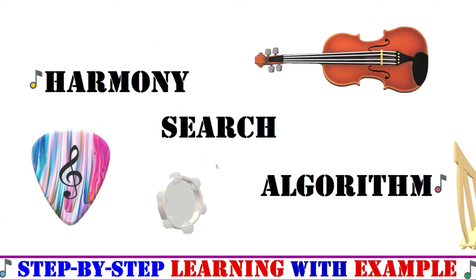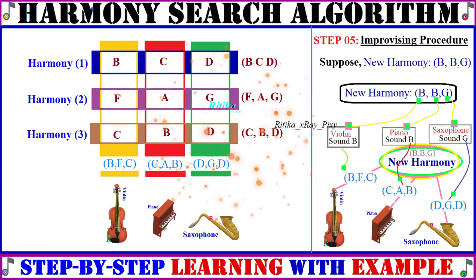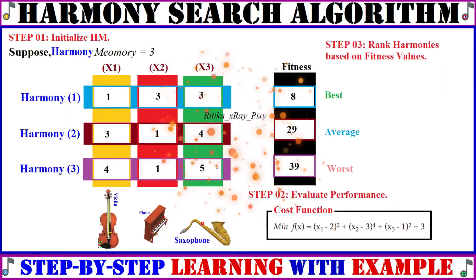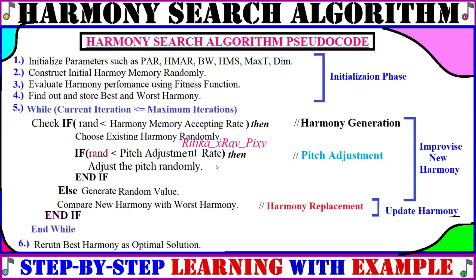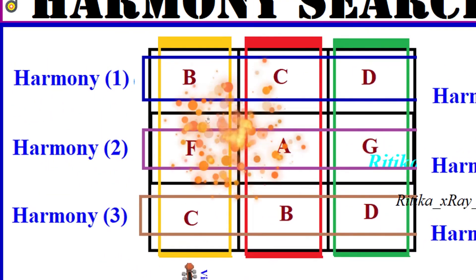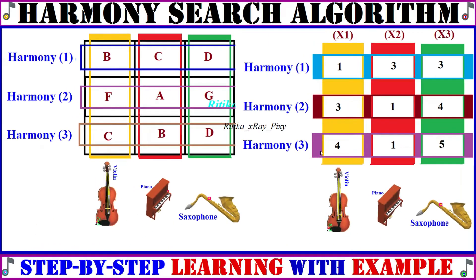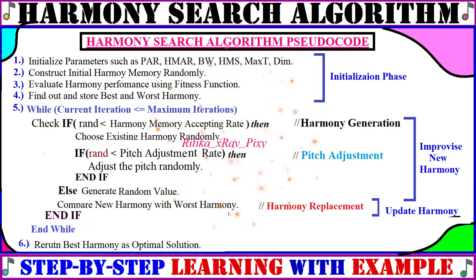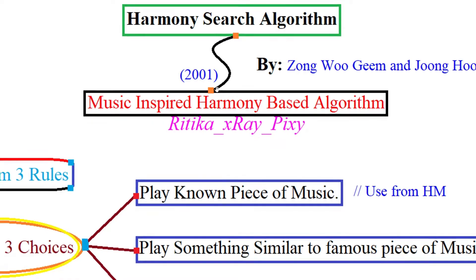This video is based on the Harmony Search algorithm. We will try to understand what this algorithm is all about, how it works, and the mathematical models used. For better understanding, we will go through examples using alphabets first and then numbers. We will also understand the algorithm step by step with a numerical example. The Harmony Search algorithm was introduced in 2001.